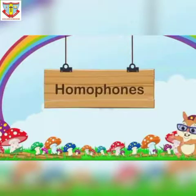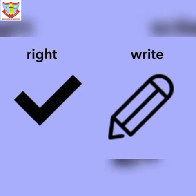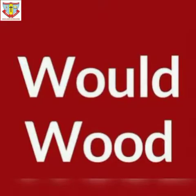For example: 'write' (W-R-I-T-E) and 'right' (R-I-G-H-T) — these sound the same but are spelled differently. Another example: 'wood' (W-O-O-D) and 'would' (W-O-U-L-D) — again, same sound, different spelling and meaning.